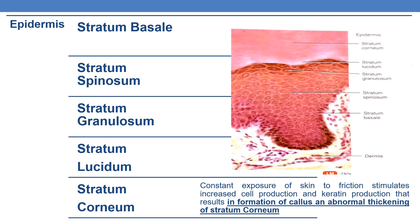The epidermis is composed of five layers: stratum basale (the deepest layer), stratum spinosum, stratum granulosum, stratum lucidum, and stratum corneum. From a clinical or coding point of view, one important point is that constant exposure of the skin to friction stimulates increased cell production and keratin production, resulting in the formation of a callus — which is an abnormal thickening of the stratum corneum.